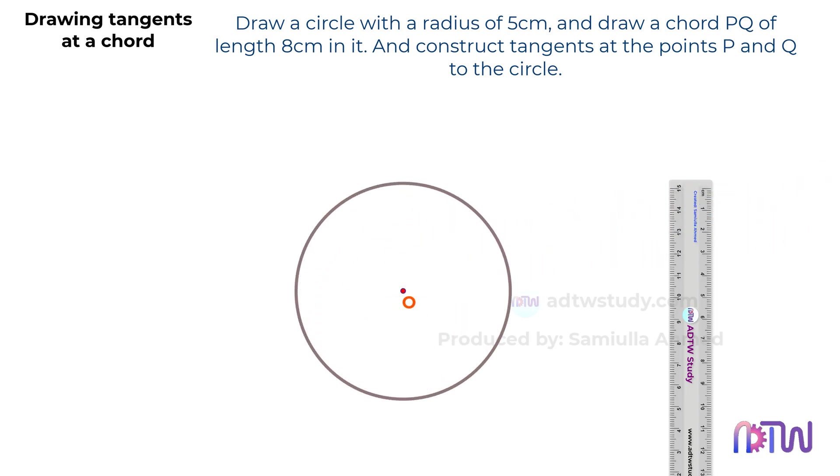Moving on, locate a point on the circumference of the circle and label it as P. Take a compass and adjust it to a length of 8 centimeters as shown. With point P as the center, draw an arc on the circumference of the circle.